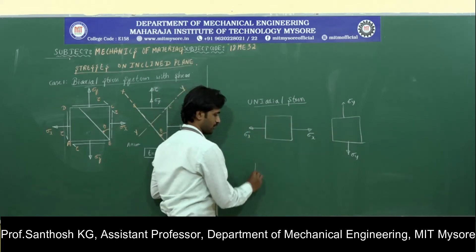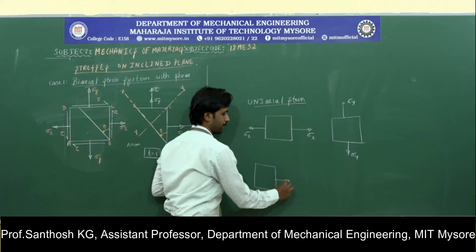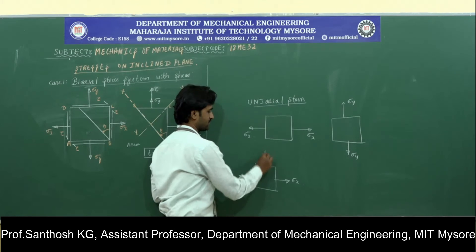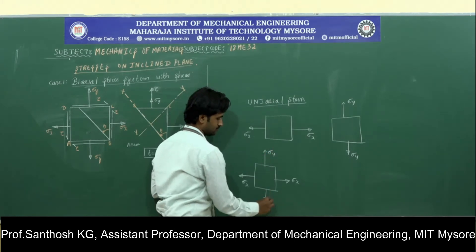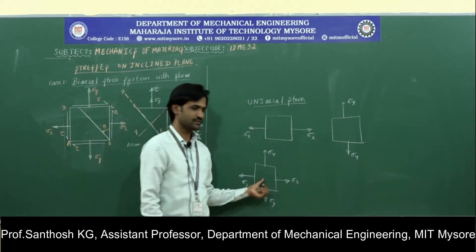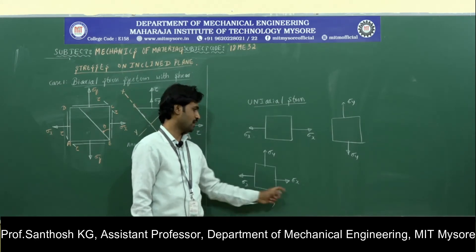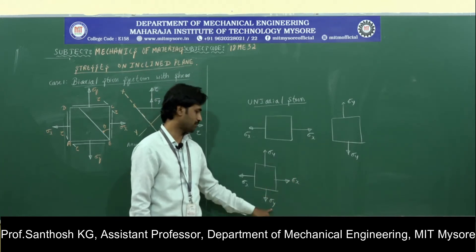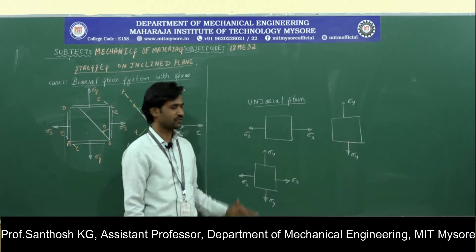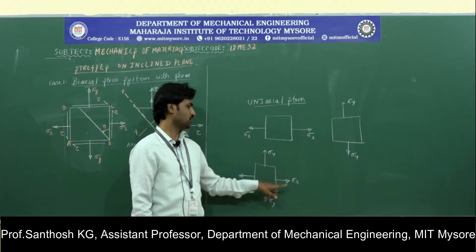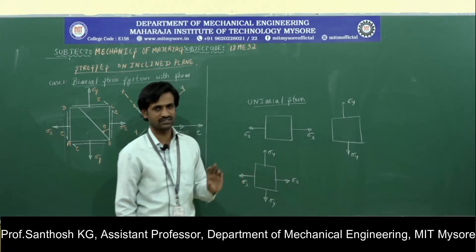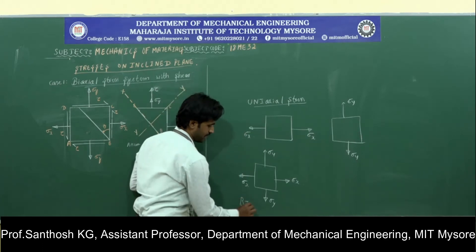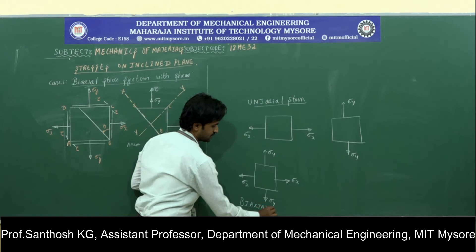Similarly, for a given member, if you are applying stresses in two different directions — for example, we apply the normal stress along the x-axis and also the normal stress along the y-axis — then if you apply normal stresses in two different directions, we call such a system a biaxial stress system.